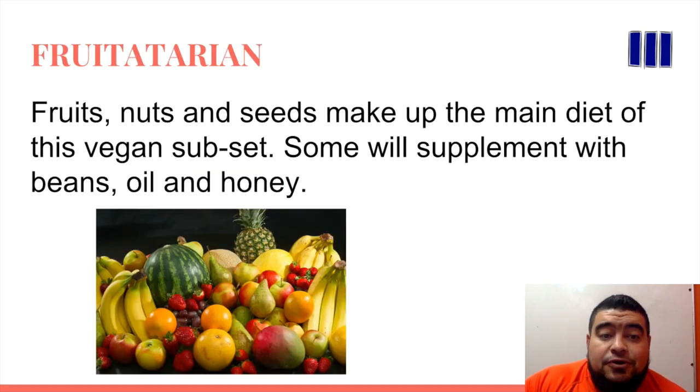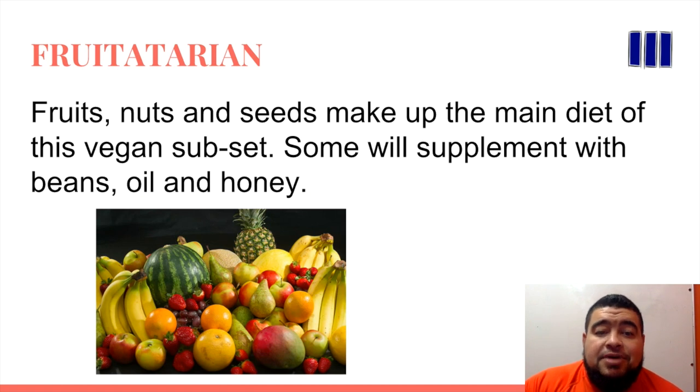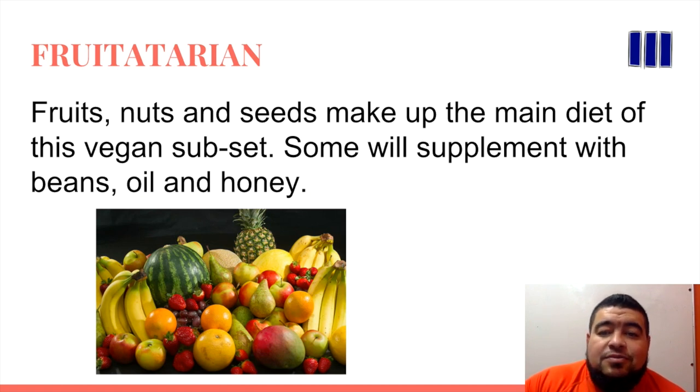Fruiterian — fruits, nuts, and seeds make up the main diet of this vegan subset. Some will supplement these with beans, oil, and honey.